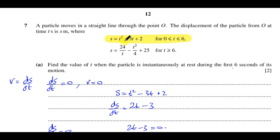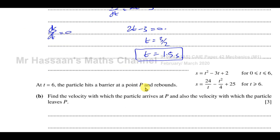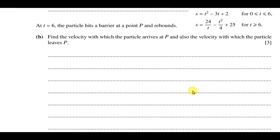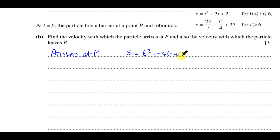Now for part B. At time t equals 6 the particle hits a barrier at point P and rebounds. We need to find the velocity with which the particle arrives at P and the velocity with which it leaves P. When it arrives at P it is following the equation s equals t squared minus 3t plus 2, and we want the velocity — which is ds/dt — when t equals 6 seconds.